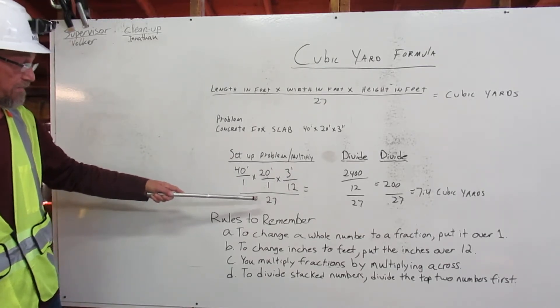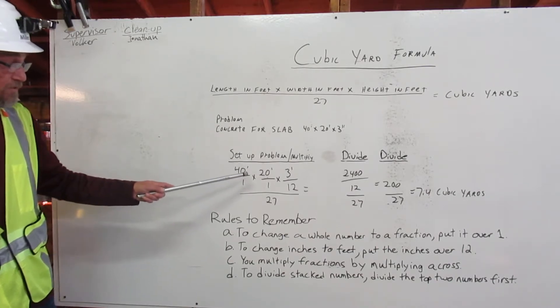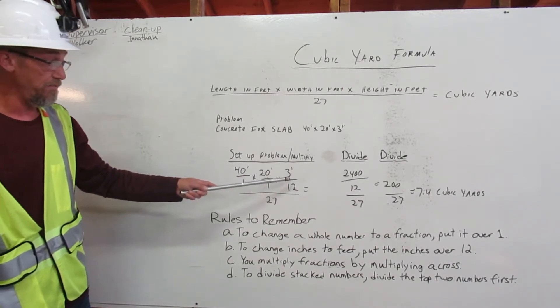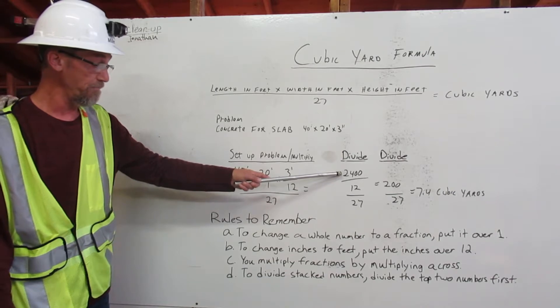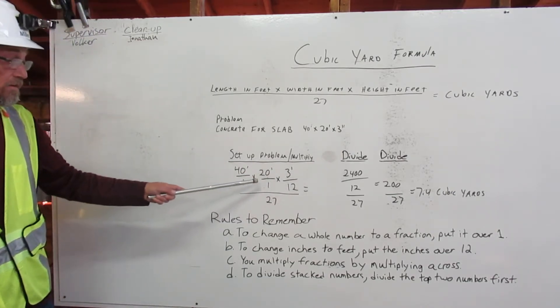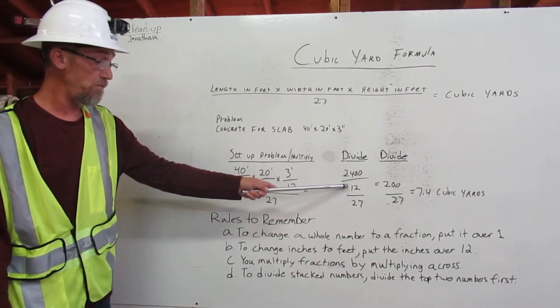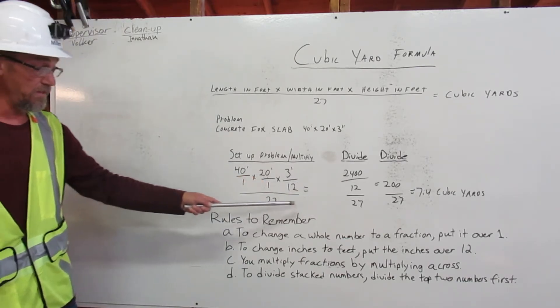Over 27. So 40 times 20 feet times 3 feet is 2,400. 1 times 1 times 12 is 12. You bring over the 27.